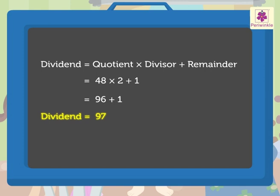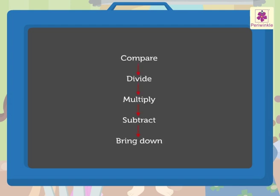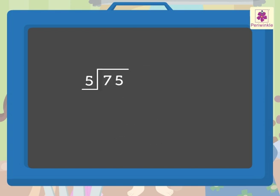What is 75 divided by 5, children? Here also you will have to follow the same five steps process explained in the previous example. We start with comparing the digit in the tens place, that is 7, with 5. Yes, 7 is greater than 5, and therefore we can divide 7 by 5.